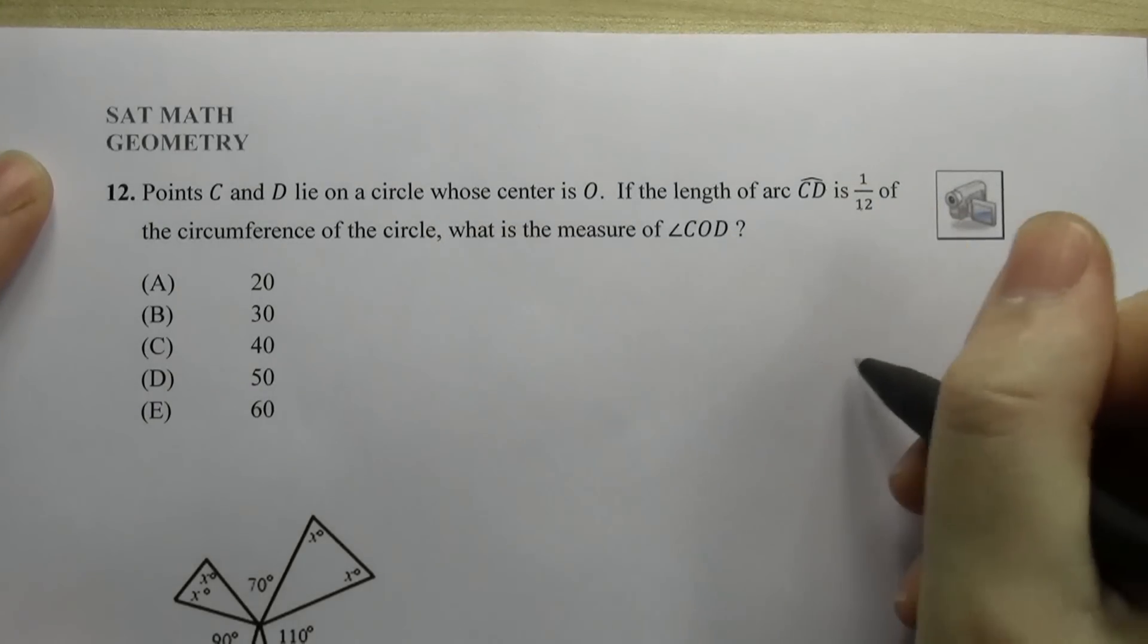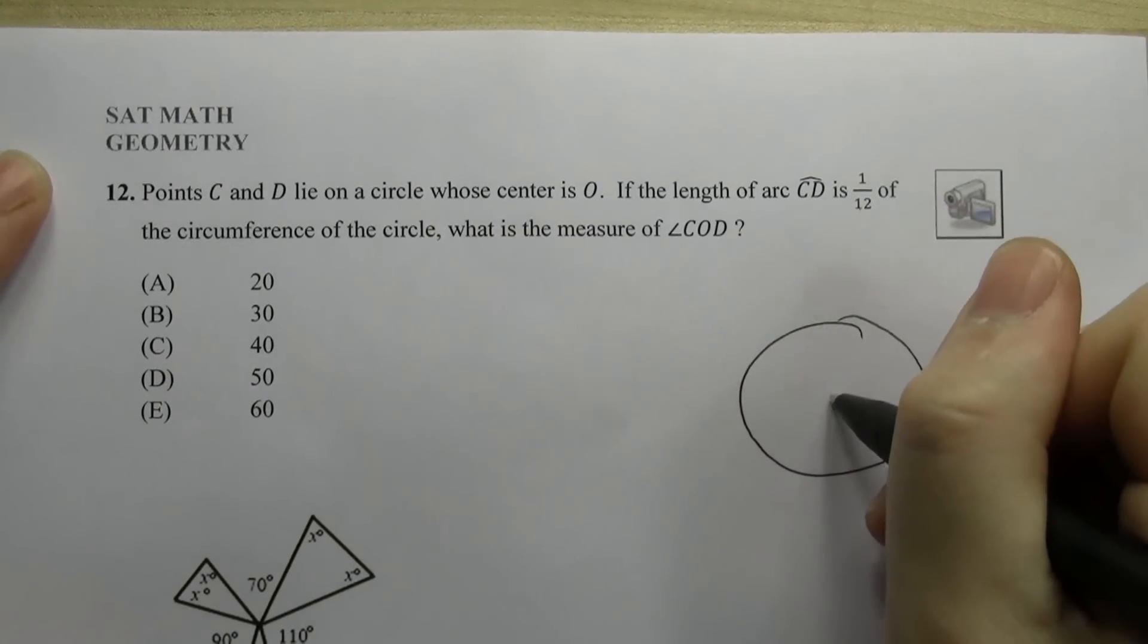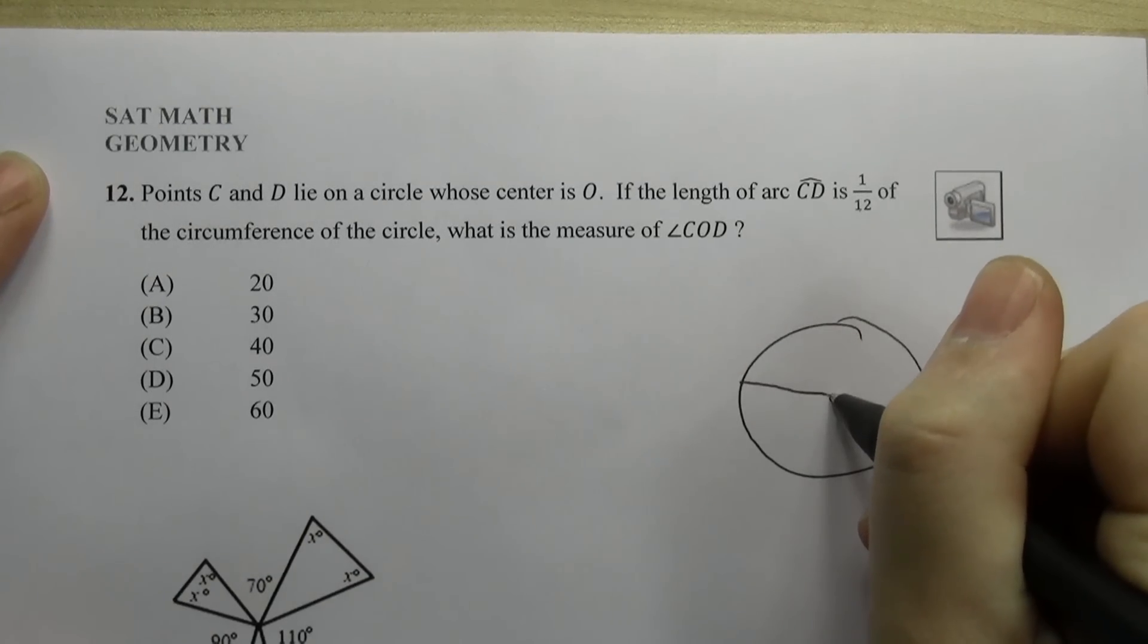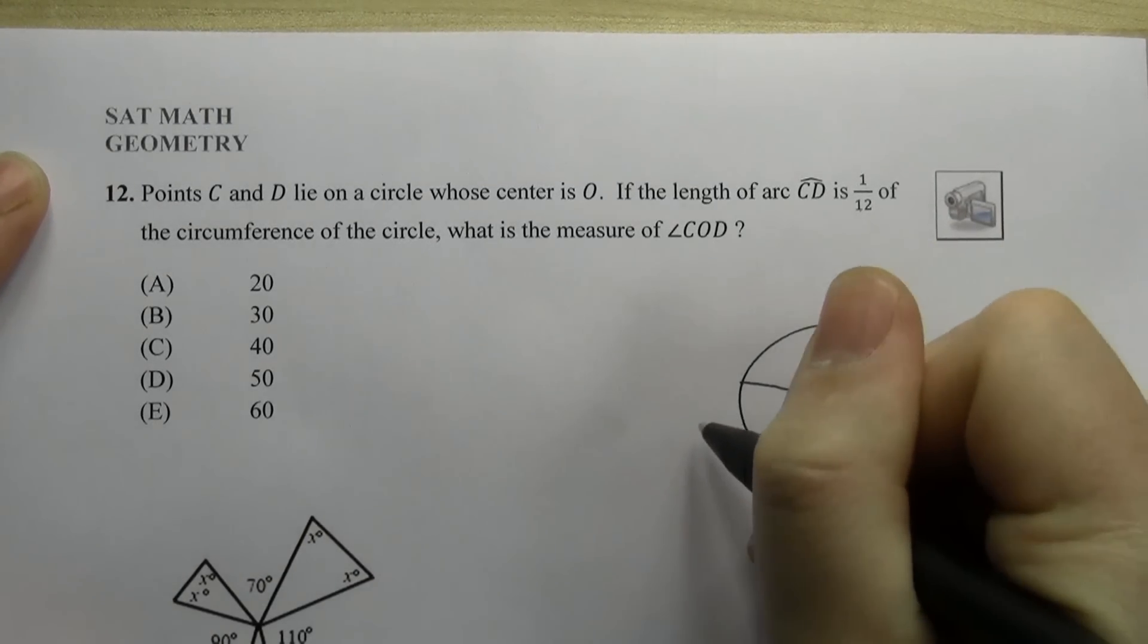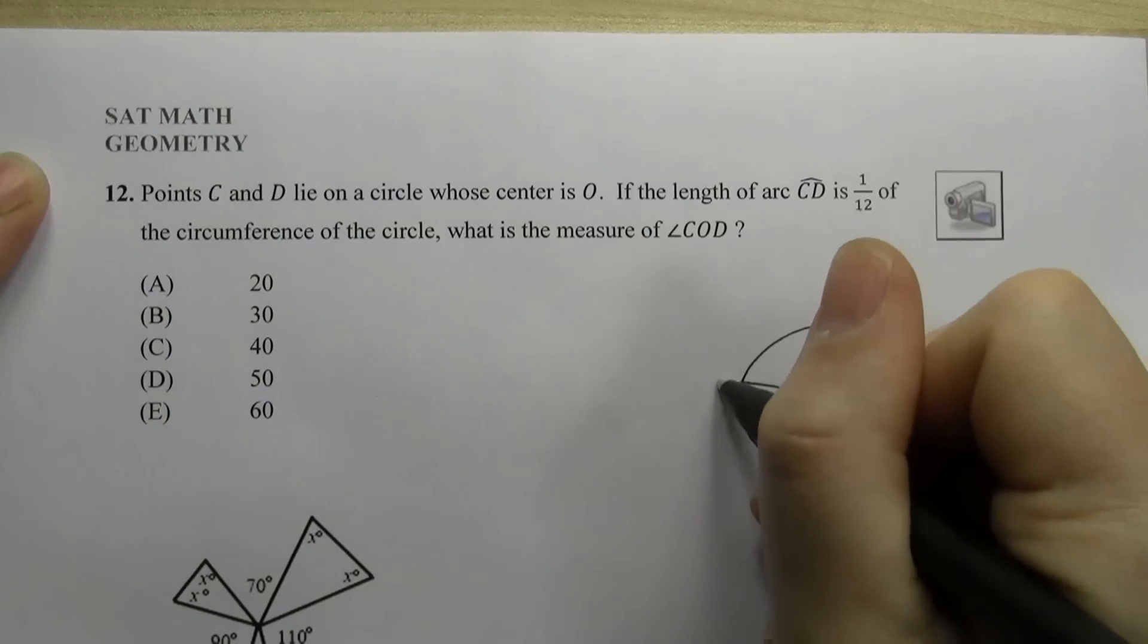So the first thing we're going to do is we're going to draw a picture, right? Draw a circle, center O, and it says that CD is 1/12. So it's going to be pretty small. So CD.